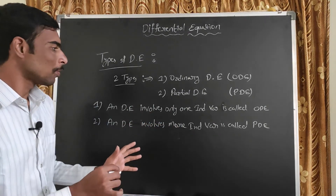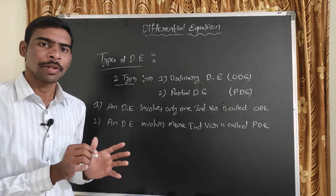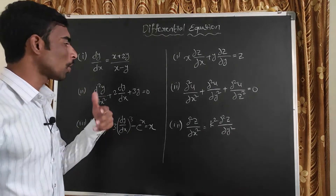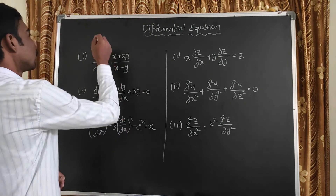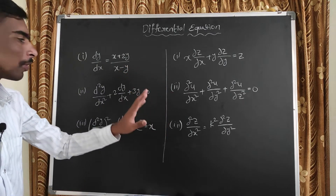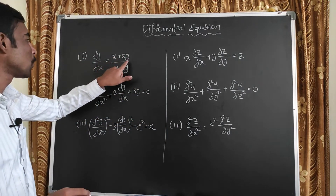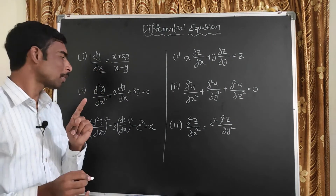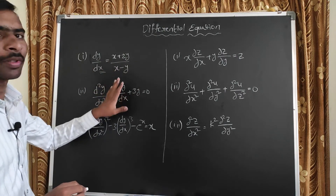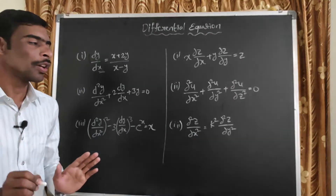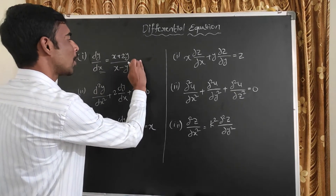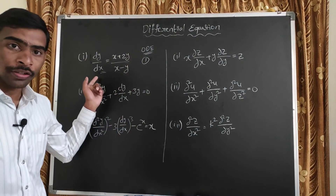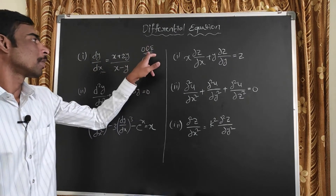Let's look at examples — one independent variable versus more than one independent variable. For ordinary differential equations: dy/dx equals (x + 2y) / (x − y). Here the equation is differentiated with respect to x only — only one variable is differentiated. So dy/dx has only one independent variable.